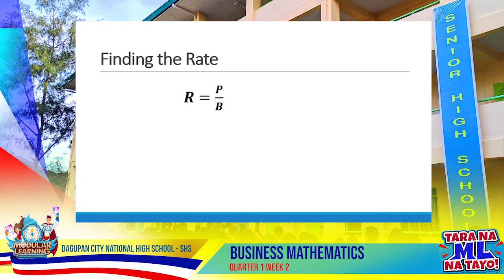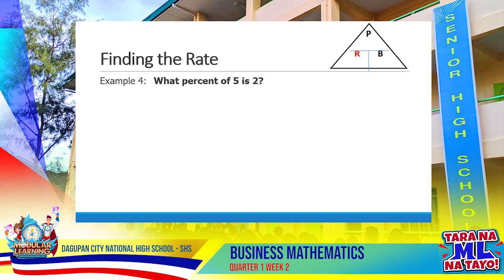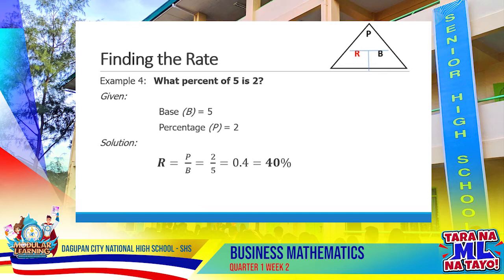Problems finding the rate: In this problem, we use the formula Rate equals percentage divided by the base. Statements regularly used to state this problem are: What percent of 400 is 60? or 60 is what percent of 400? Example number 4: What percent of 5 is 2? The base is 5 and the percentage is 2. Dividing 2 by 5 equals 0.4. And 0.4 in percent form is 40%.